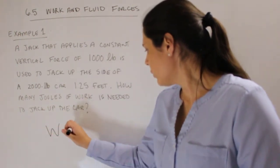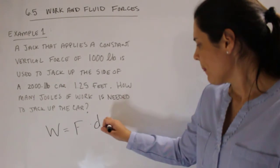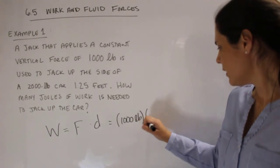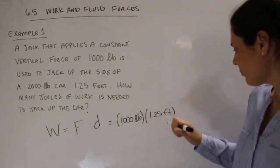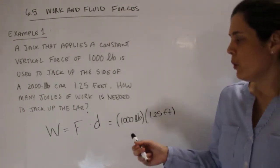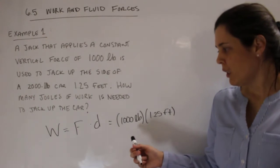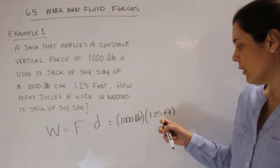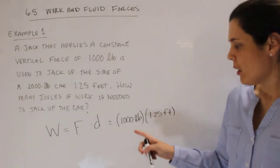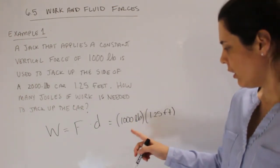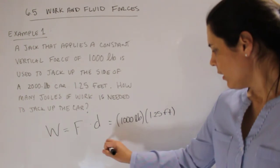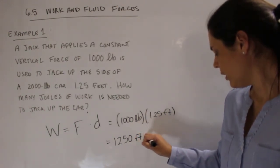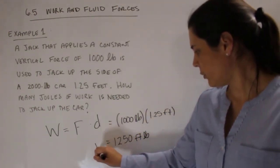So we know that work is force times distance. So we have our force of 1,000 pounds times our distance of 1.25 feet. Now if you didn't know the conversion from foot pounds to joules, like I just showed you, but you did know the conversion from pounds to newtons and feet to meters, you can convert it that way. But we do know the conversion from foot pounds to joules, so we'll go like that. So this ends up being 1,250 foot pounds of work is needed to jack up this car.